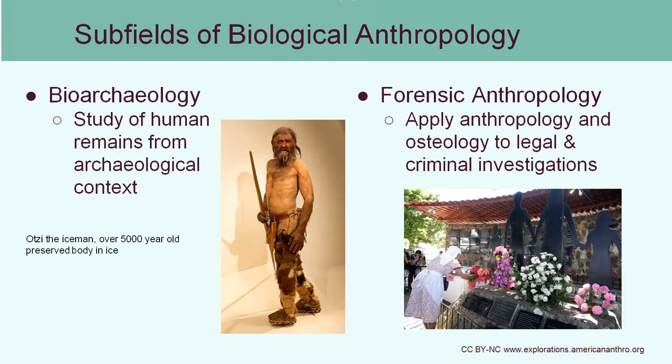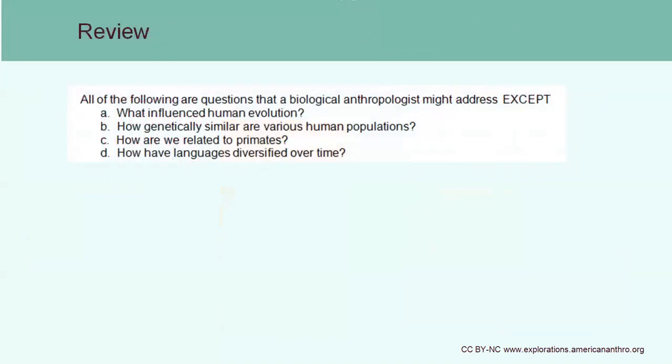We can also use forensic anthropology to discover more about people who died a long time ago — even hundreds of years ago — which kind of goes along with archaeology where they look at the material remains around the person as well as their skeleton. My next review question: all of the following are questions that a biological anthropologist might address except — A, what influenced human evolution? B, how genetically similar are various human populations? C, how are we related to primates? Or D, how have languages diversified over time? The correct answer is D. Languages is something that a linguistic anthropologist would study.